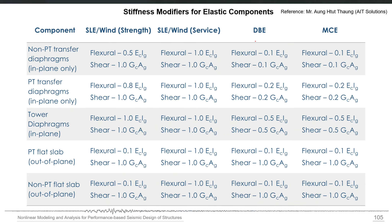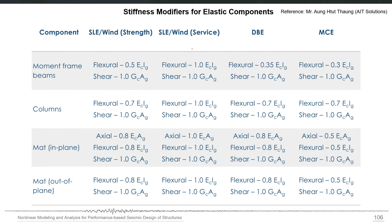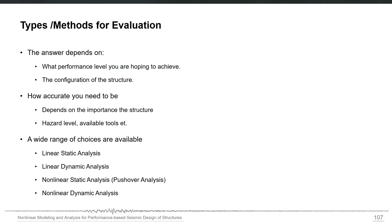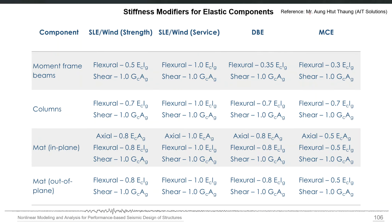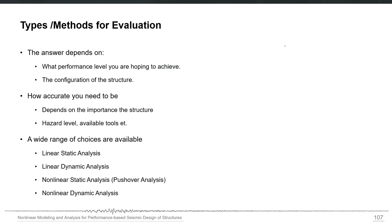Stiffness modifiers for elastic components differ by earthquake level — DBE, MCE, wind or service level — and are different for each component. These modifiers are applied only to elastic (force-controlled) components, not to inelastic (non-linear) components. Different building codes and guidelines provide these factors.